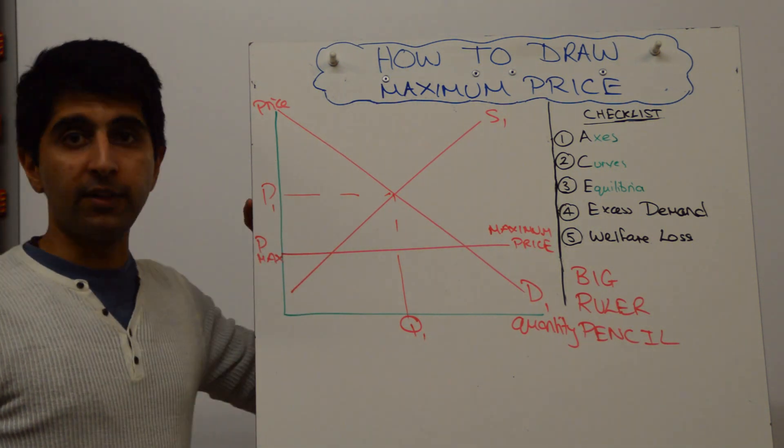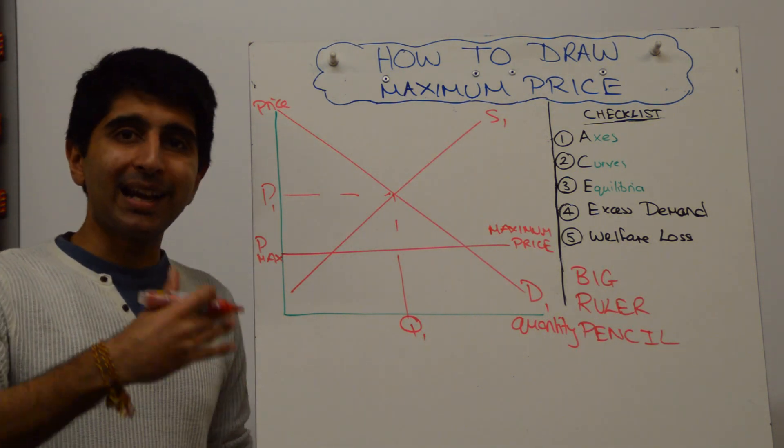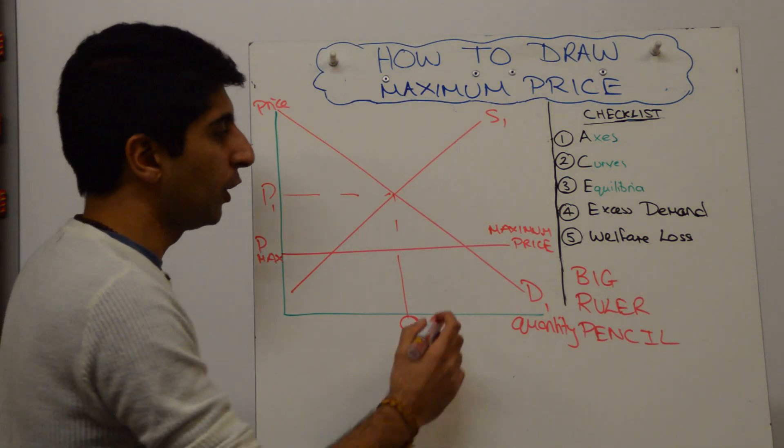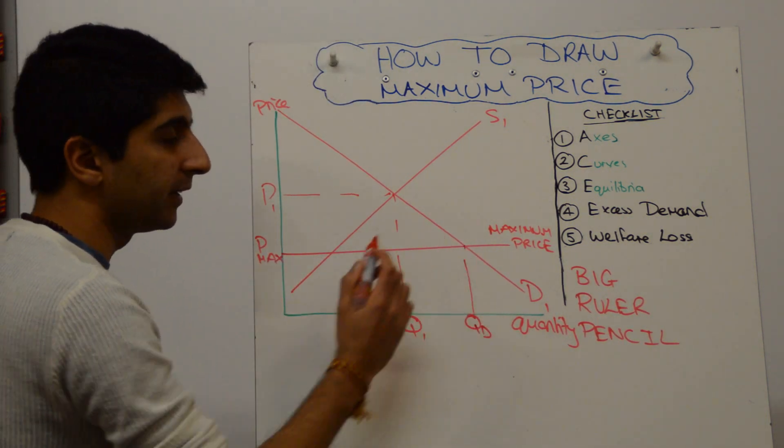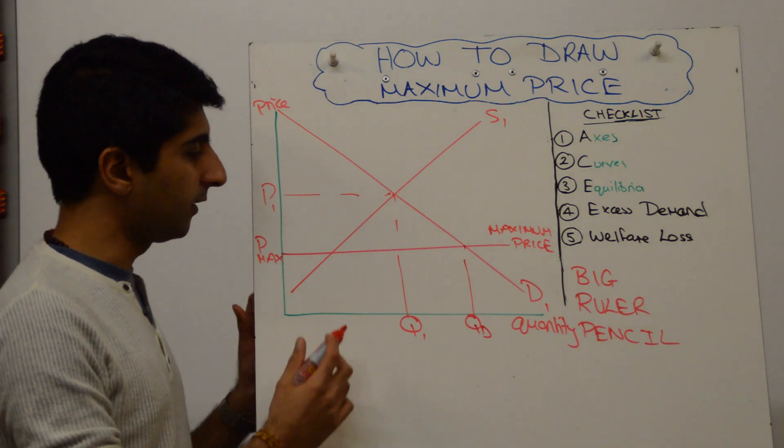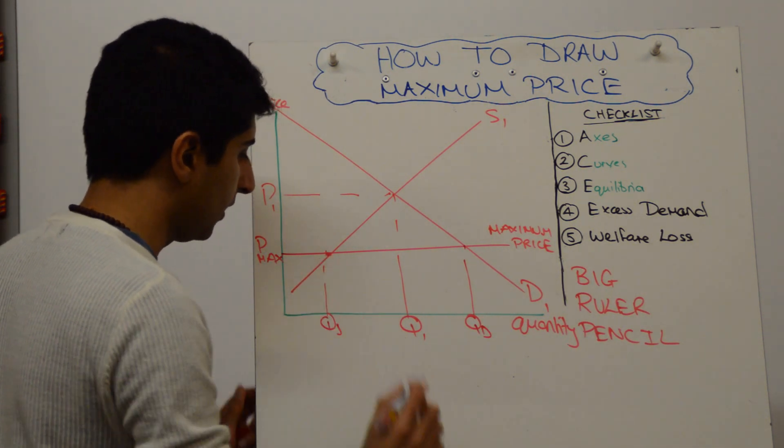Next, we've just distorted the price in the market, so there's going to be a change now in demand and supply. Make that clear to the examiner. So you know that demand is going to be here, where the new price hits the demand curve. Where the new price hits the supply curve is here, we can call that QS.